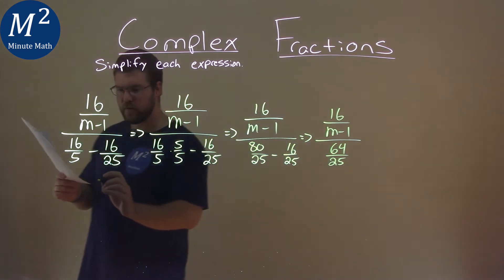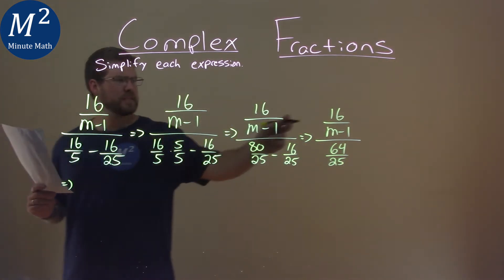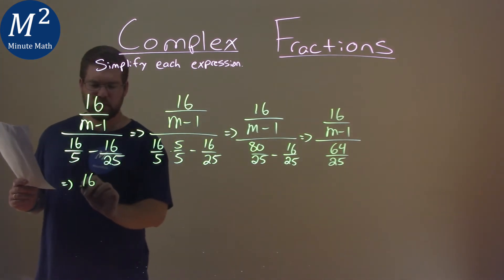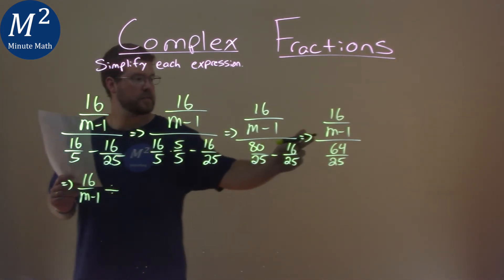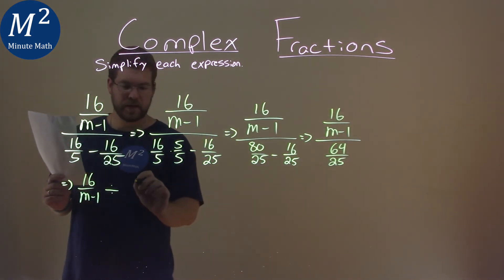So let's continue writing that over here, and we'll see something. We have 16 over m minus 1 divided by, instead of that bar right here dividing it, 64 over 25.